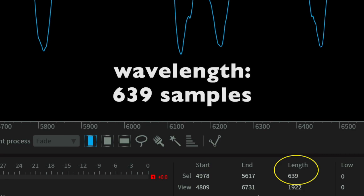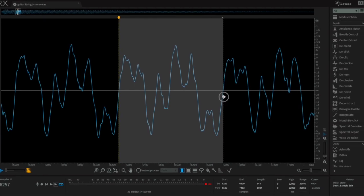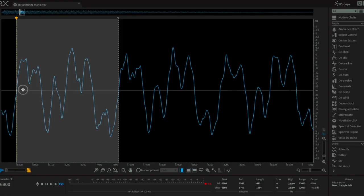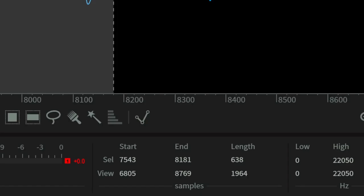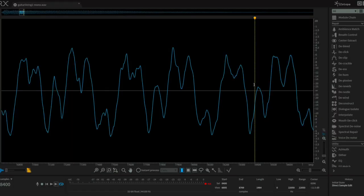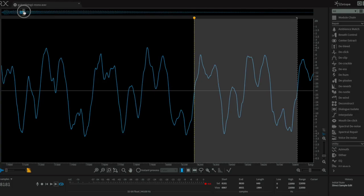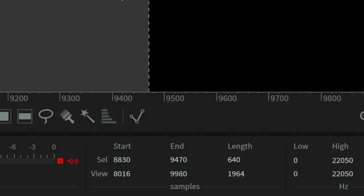Let's move the selection to the next wave. And once again, you see the length displayed below. Let's do this a few more times. We can see that the length is not the same every time the wave repeats. It moves in a range of about four or five samples.